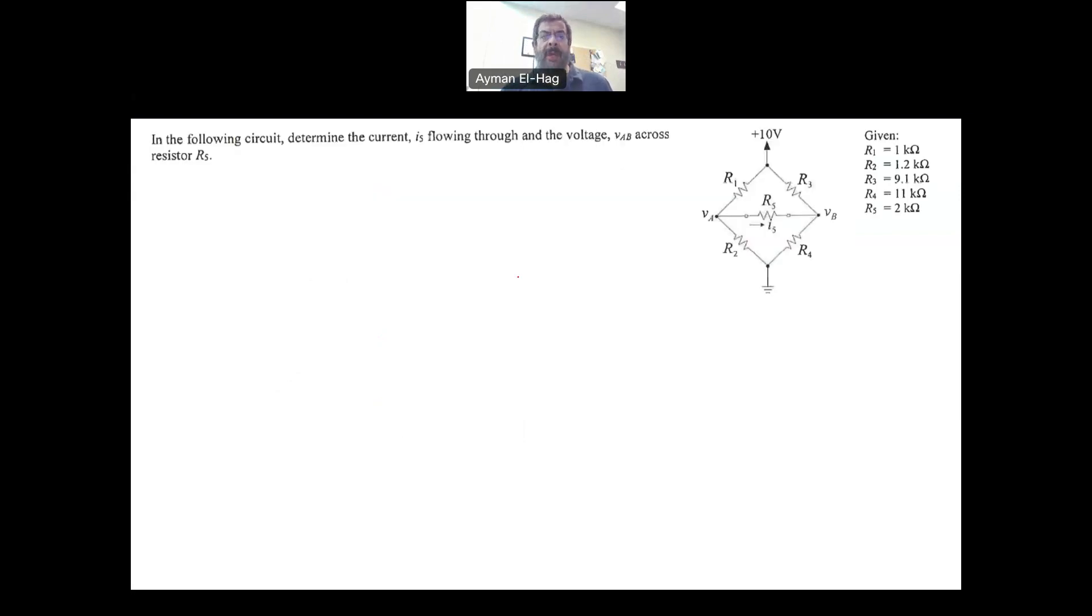I will start by solving this question the classical way, which is like a circuit question, and I will use nodal analysis. Let me redraw the circuit to make it easier to visualize. So we have here R1 as 1 kΩ, then we have here R2 as 1.2 kΩ. R3 is 9.1 kΩ, and basically R4 is 11 kΩ.